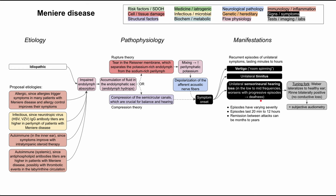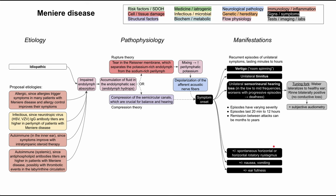There are some other symptoms as well. Patients can have spontaneous horizontal or horizontal-rotary nystagmus, nausea and vomiting, and ear fullness. Because of the vertigo and room-spinning sensation, patients can also experience falls and physical injuries or trauma from those falls. This has been the flowchart for Meniere disease — I hope it was helpful, and thank you for listening.